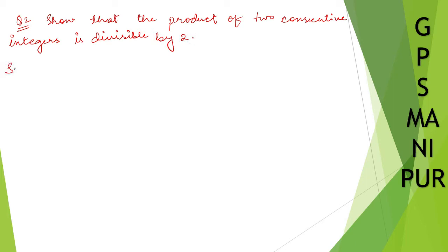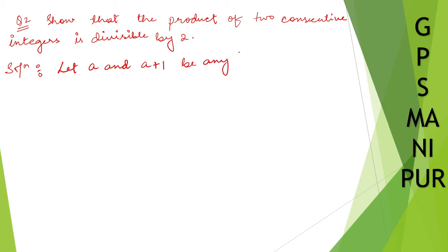This is the question. Let us write down the solution. The question is asking to show that the product of two consecutive integers is divisible by two. First, we need to take two consecutive integers. Let a and a plus one be any two consecutive integers, since consecutive means one after another — after a comes a plus one.